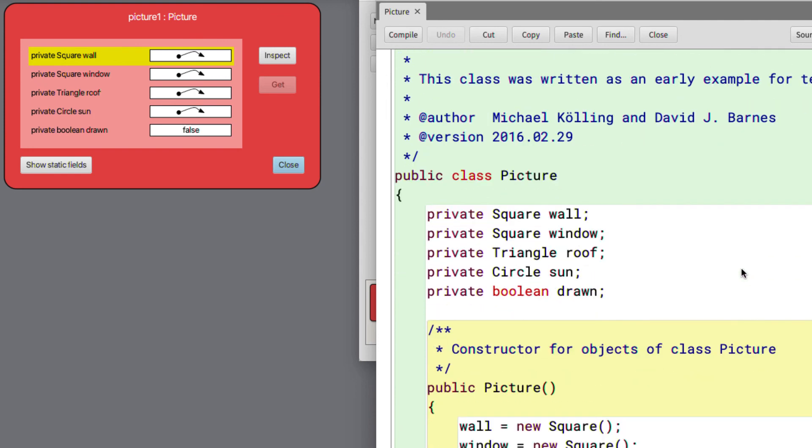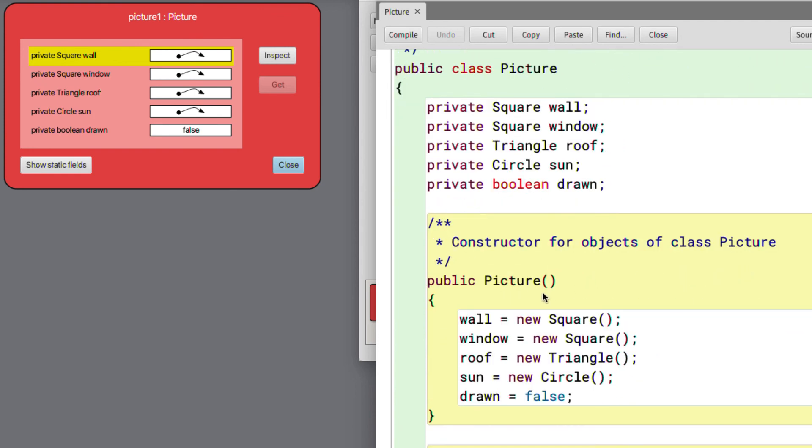in the constructor, when a picture object is created, we need to create two new squares. We need to create a triangle. We need to create a circle. Because those are the elements that make up the overall picture, the picture of a house.